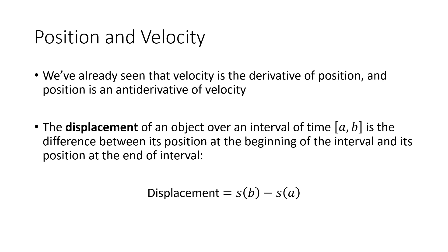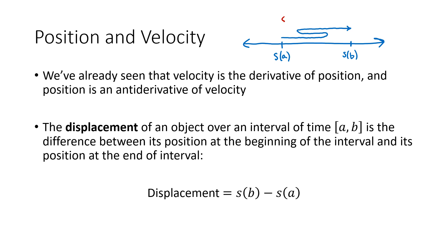I'm going to introduce a new concept: displacement. The displacement of an object over an interval of time is the difference between its position at the beginning of the time interval and its position at the end. We consider an object moving along a straight line — maybe it starts at s(a), travels forward and backward, and eventually ends up at s(b). We close our eyes at the beginning and open them at the end to see how far apart those two positions are.